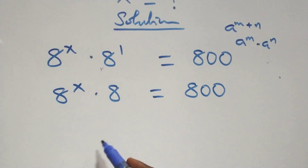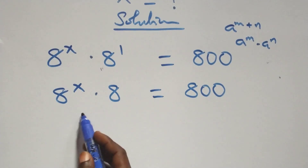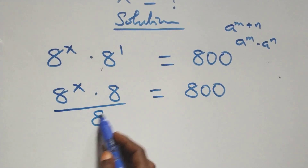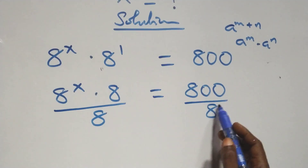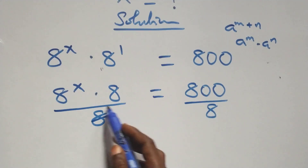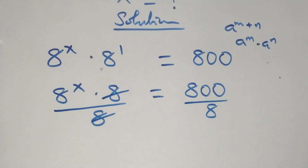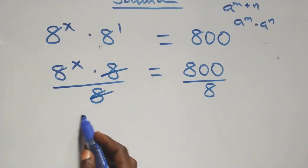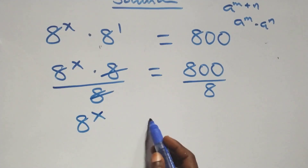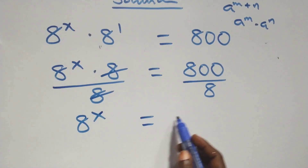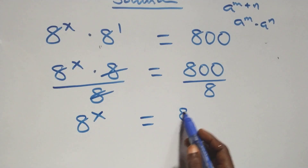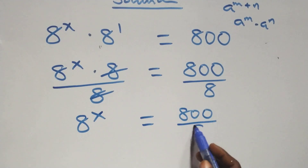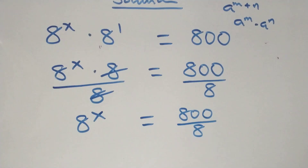The next step: we divide both sides by 8 — divide this side by 8, also divide this side by 8. Here the 8s cancel each other, and we have 8 raised to power x equals 800 over 8.